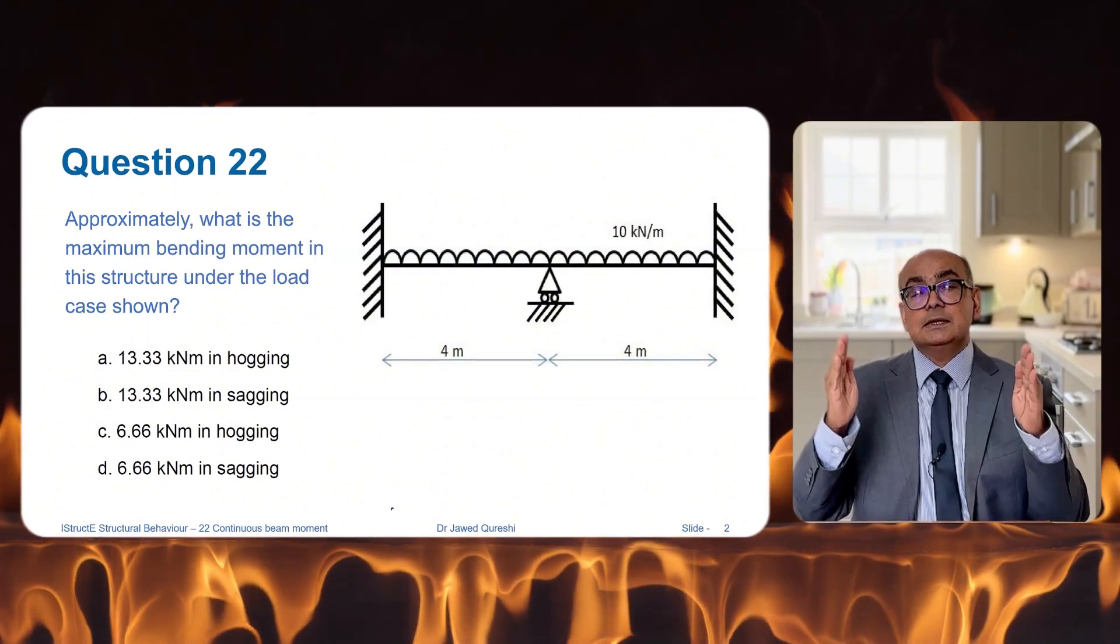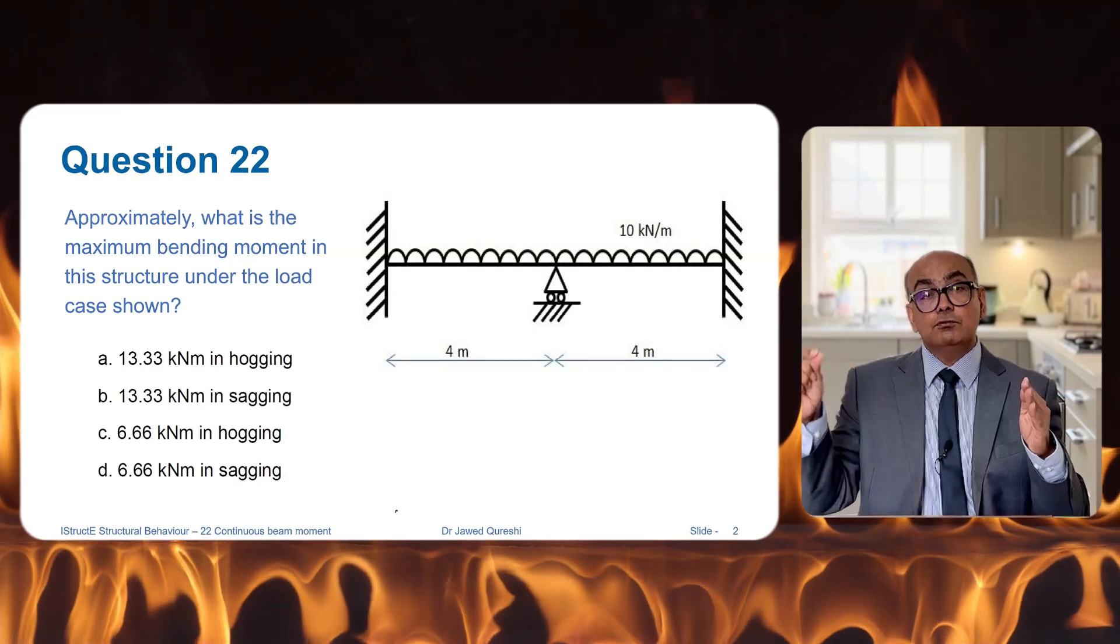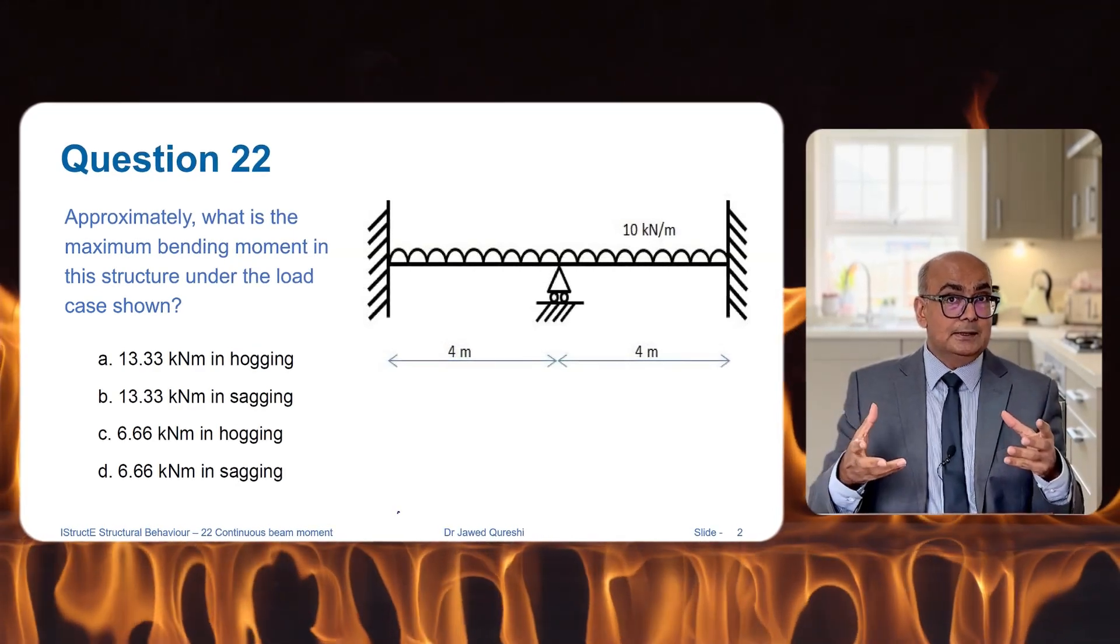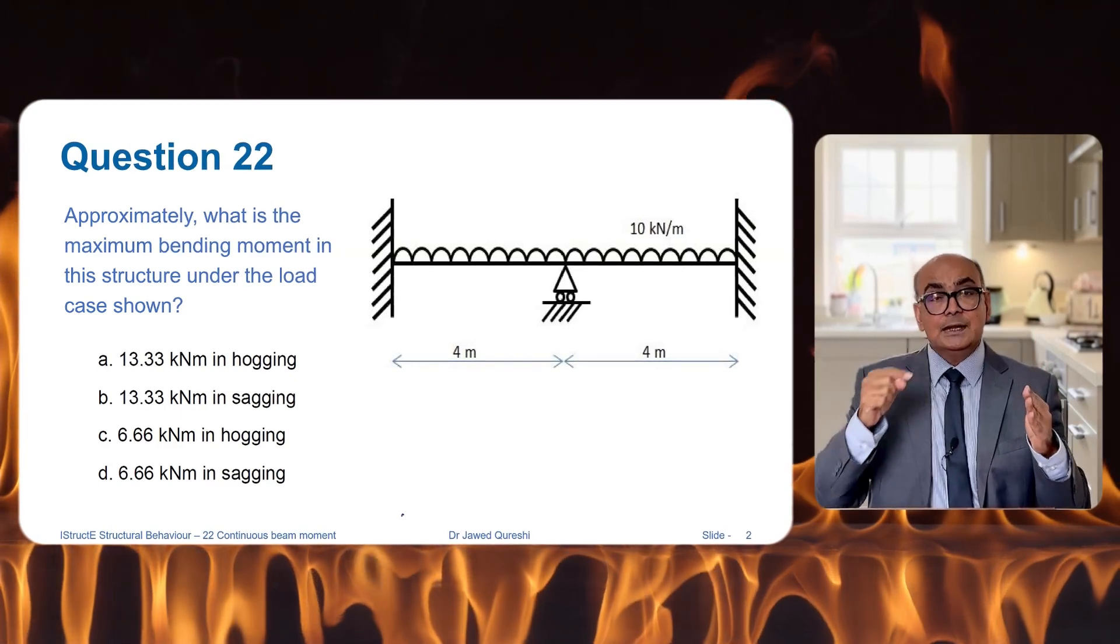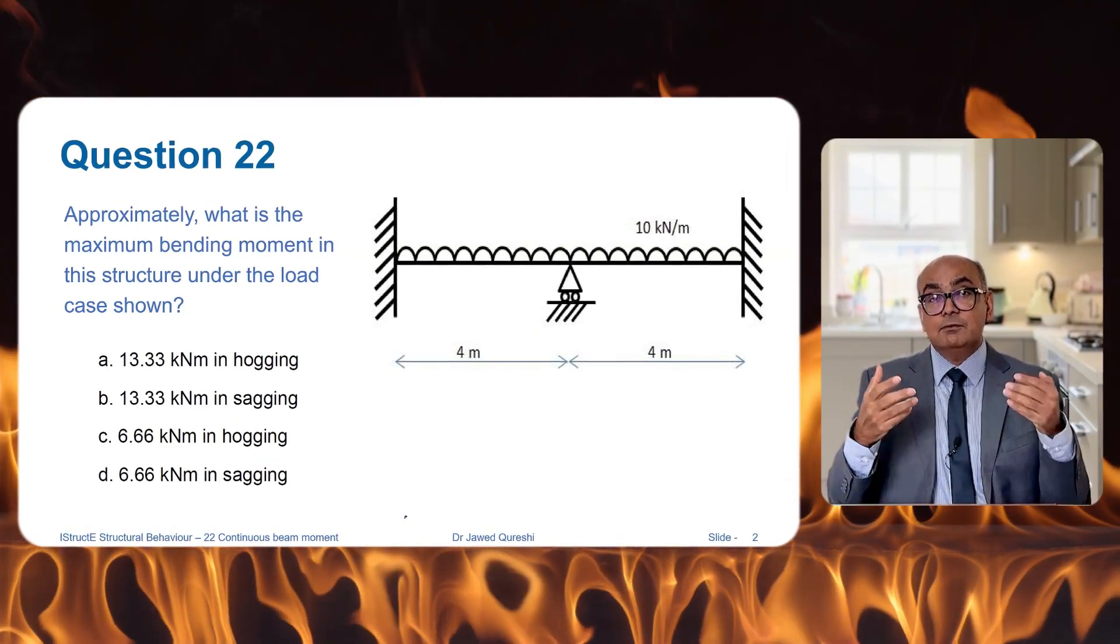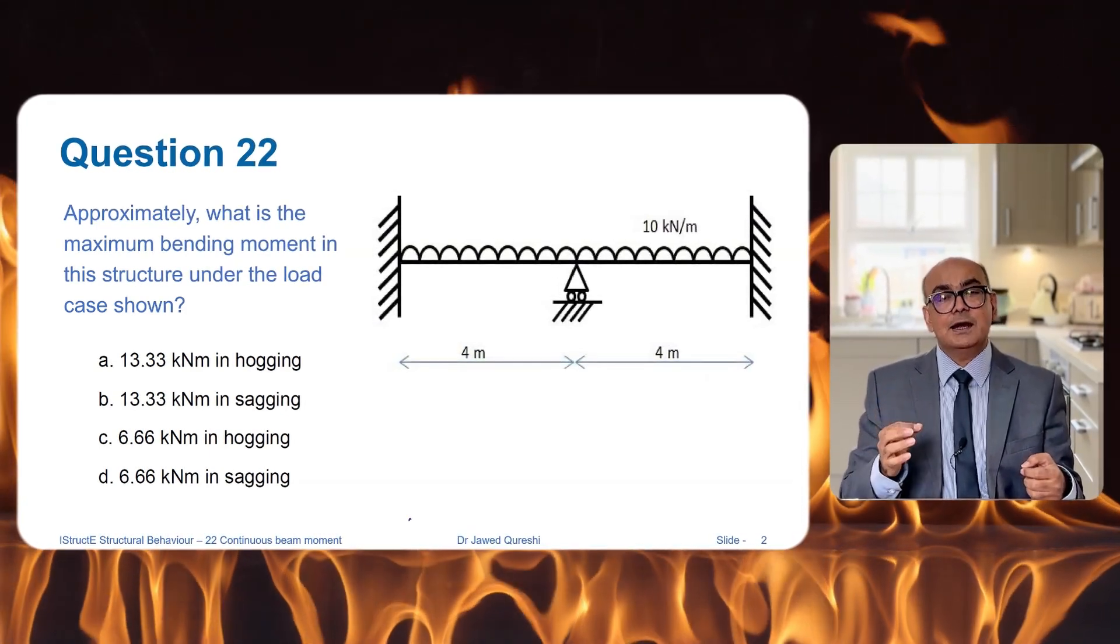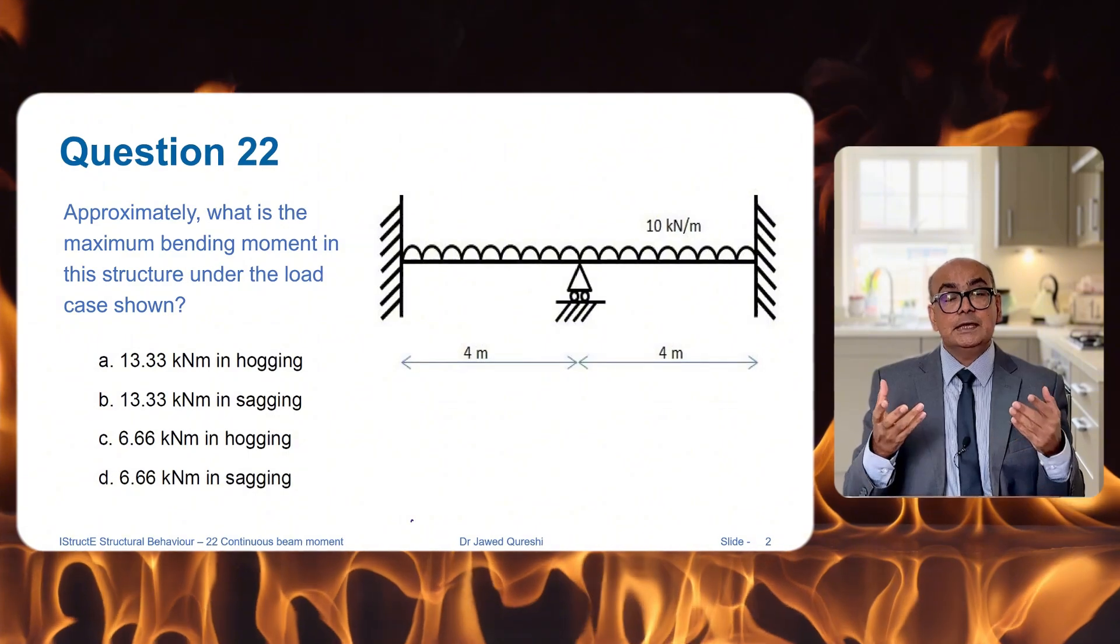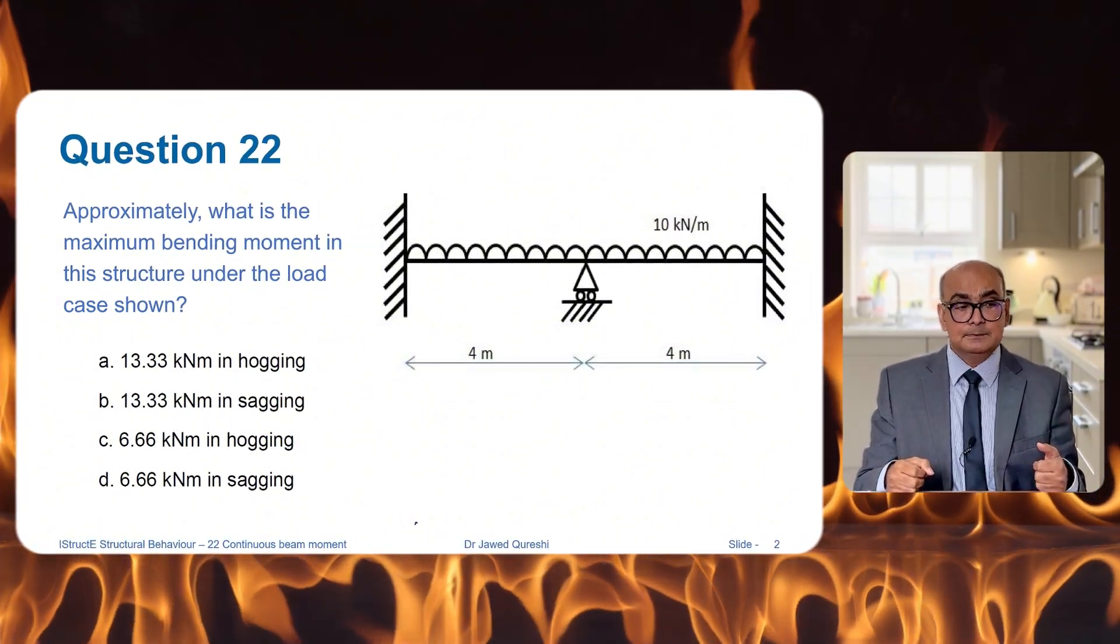two beams consisting of fixed supports with uniformly distributed load applied. You will get end moments and you will get a sagging moment as well, and there are quick formulas for that. Use these formulas to work out the moments and that will give you the maximum bending moment in the span.